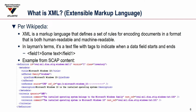SCAP is built entirely in XML. Many people watching may already have a lot of knowledge of XML. XML is a markup language that defines a set of rules for encoding documents in a format that is both human readable and machine readable. In layman's terms, it's a text file with tags — you can indicate when a data field starts and ends. Below is a small extract of a Windows 10 OVAL document. You can see the beginning and end tags of definition, metadata, and title, so that tools that parse this know exactly what the field is, what data type it is, and where it begins and ends.